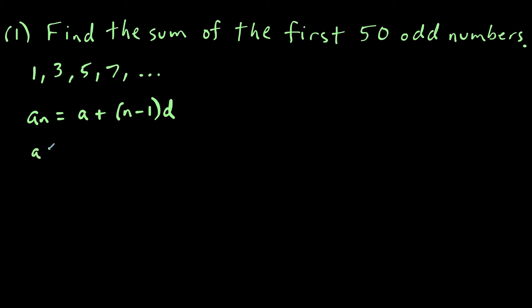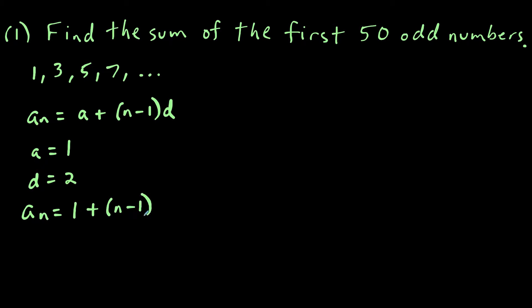Here the first term a is equal to one, and the common difference is two since we're adding two each time. So our formula for the nth term is equal to one plus n minus one times two.